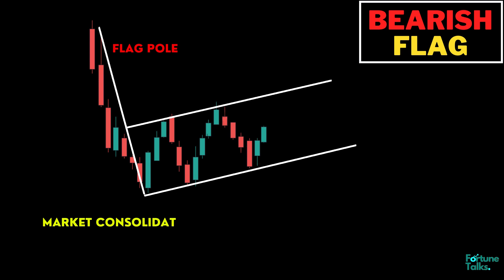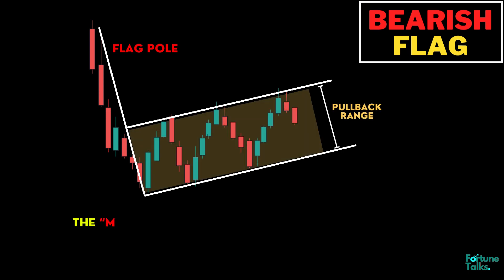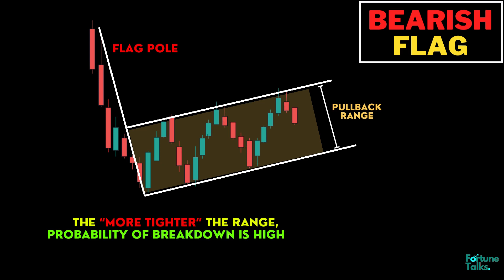After the strong move lower, the market needs to take a break. The market consolidates in a small range, forming a pullback. The pullback consists of smaller range candles. The tighter the range, the higher the probability that the market will break down.